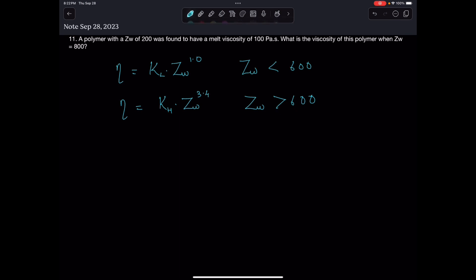If we plot a graph of log of viscosity versus log of ZW, we get a straight line initially, and then another straight line with a different slope where it breaks. That break corresponds to a log ZW value of about 2.8, which corresponds to ZW of 600.